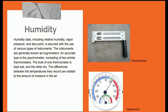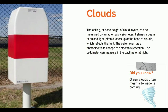On screen we see an image of a psychrometer and a regular hygrometer, showing their differences but noting they share the same purpose of measuring humidity. The ceiling or base height of cloud layers can be measured by an automatic ceilometer. It shines a beam of pulsed light — often a laser — up at the base of clouds, which reflects the light. The ceilometer has a photoelectric telescope to detect this reflection and can measure both in the daytime and at night.